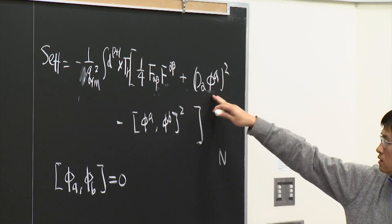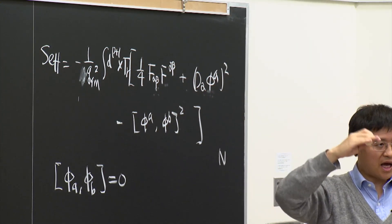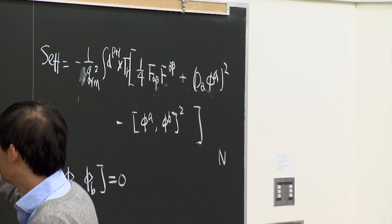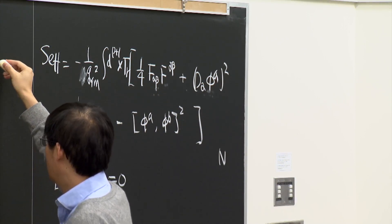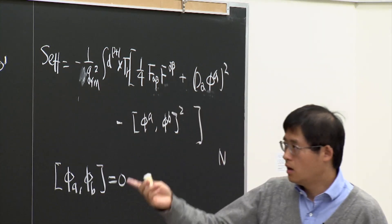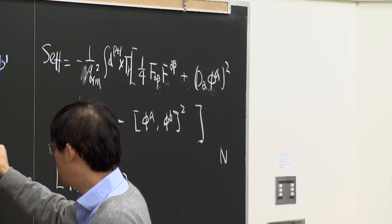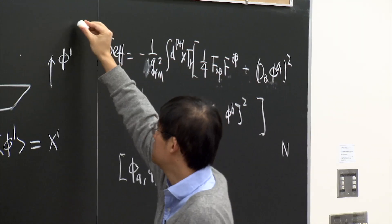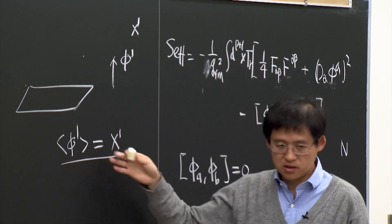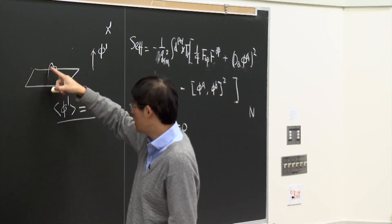We discussed that the scalar fields can be considered as describing the transverse dynamics of the brane. Consider the case of a single brane with only one transverse direction — call it the φ₁ direction. The expectation value of φ₁ can be considered as the location of the brane. This φ corresponds to the string ending on this brane and coming back to itself.